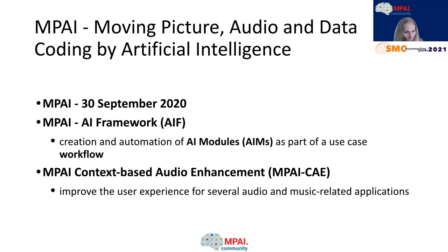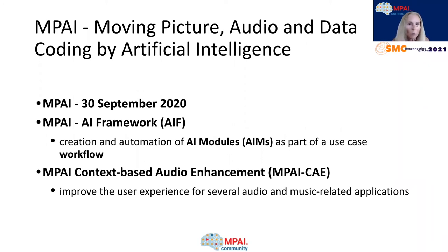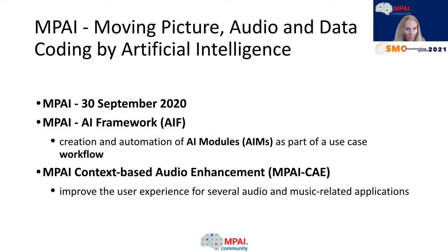The overall structure of MPI relies on the general AI framework, we call it AIF, which enables the creation and automation of mixed machine learning, AI, and legacy data processing modules, which we call collectively AI modules or AIMs. It defines the use of the AIMs as part of different use case workflows. A specific area of interest is the MPI context-based audio enhancement, we call it MPI-CHI, which aims to improve the user experience for several audio and music-related applications.